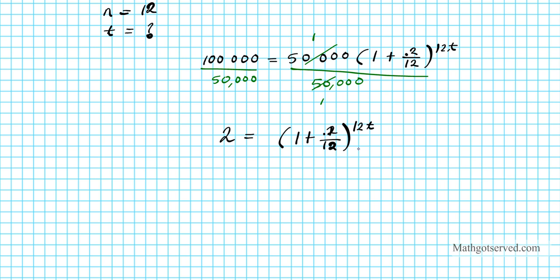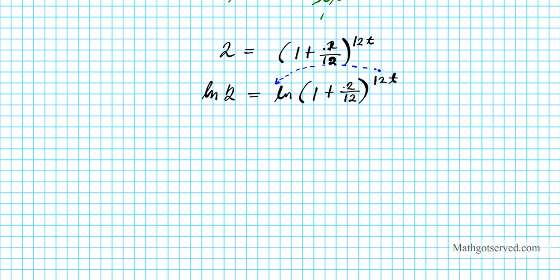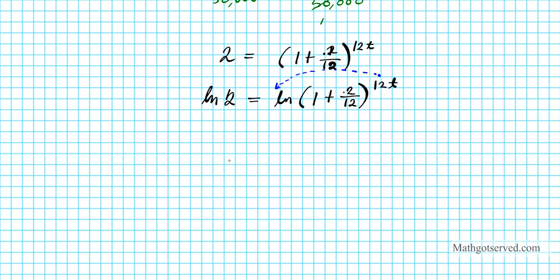So with that in mind, I need this exponent to come down. I'm going to take the natural logarithm of both sides. The natural logarithm of 2 equals the natural logarithm of 1 plus 0.2 over 12, raised to the 12t. Now that I have a natural log, I can power down this exponent. So I have ln 2 equals 12t times ln of 1 plus 0.2 over 12.